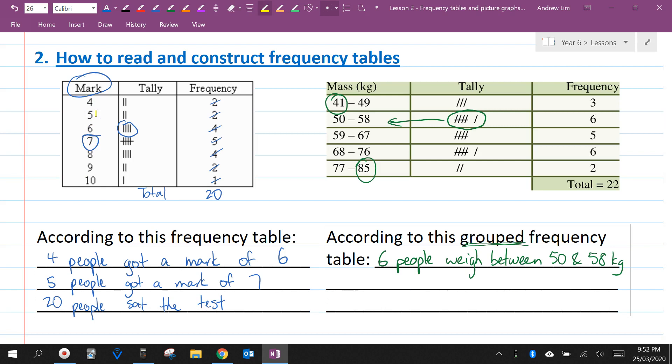So we don't have as many rows. As you can see here, we only have one, two, three, four, and five rows. What's another key piece of information? I can see here two people weigh between 77 and 85, and in total, 22 people were surveyed. So here we can see that 22 people were asked, what is your weight? We get 22 when we add all of these numbers together.